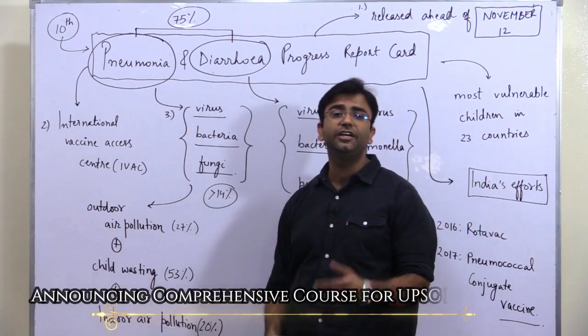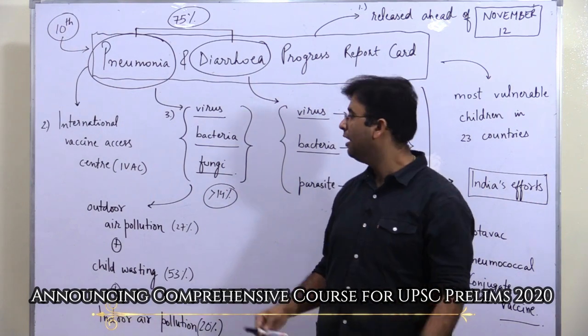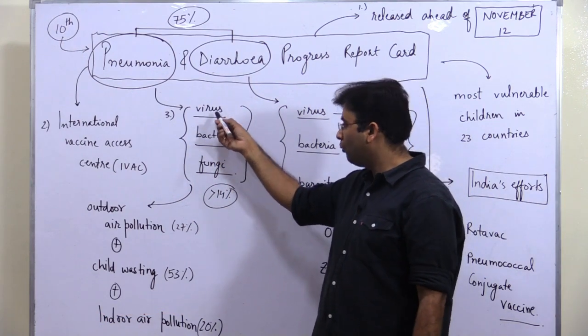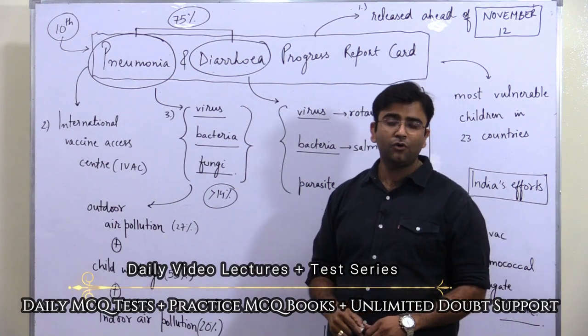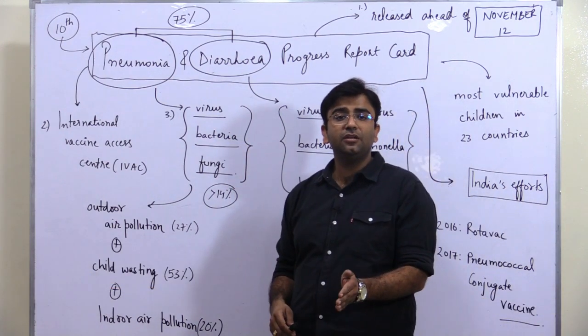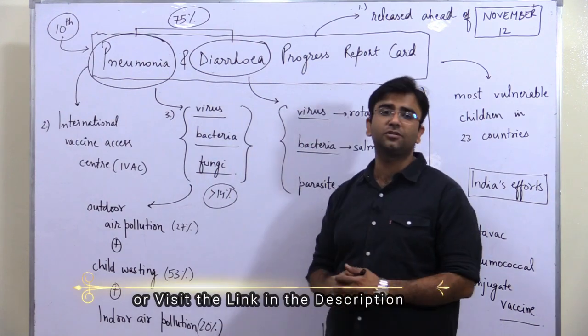Pneumonia can be caused by virus, bacteria, as well as fungi. Pneumonia has been a cause of more than 14% of total children deaths in the previous year.